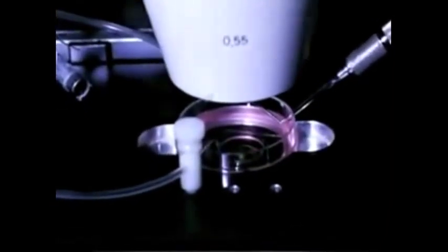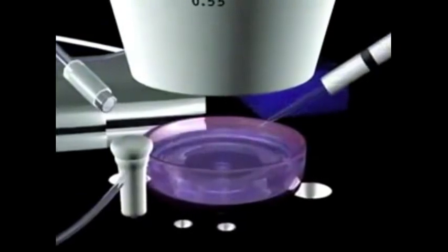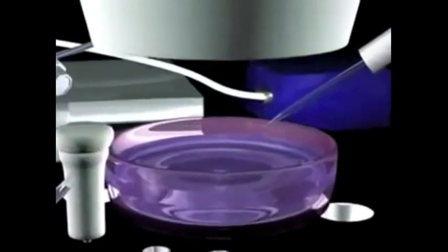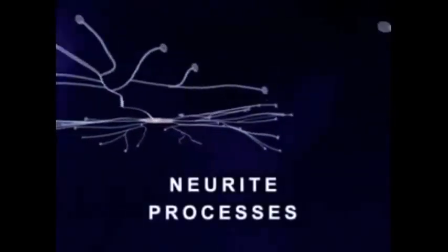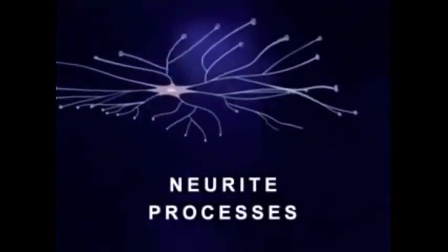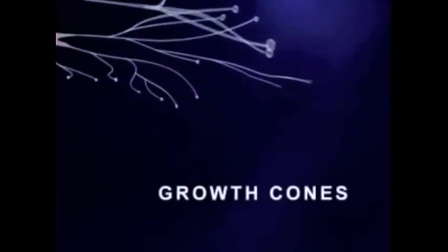To better understand mercury's effect on the brain, let us first illustrate what brain neurons look like and how they grow. In this animation we see three brain neurons growing in a tissue culture, each with a central cell body and numerous neurite processes.